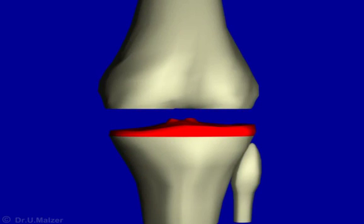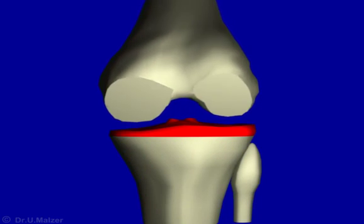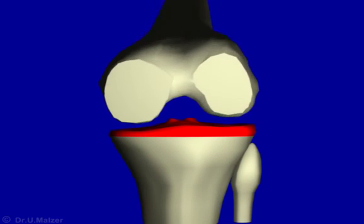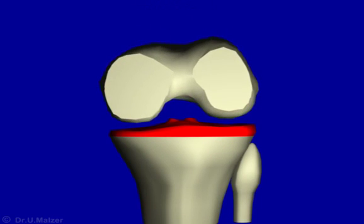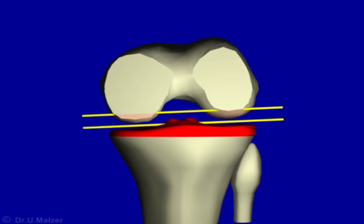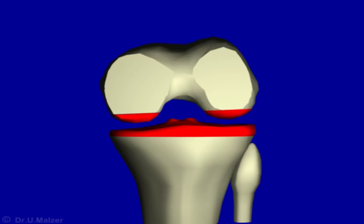But what about the flexion gap? The tibia is asymmetrically resected, with less bone removed medially and more bone removed laterally. The posterior femoral cuts are made parallel to the posterior condylar line. This produces a trapezoidal gap in flexion.